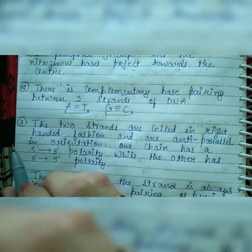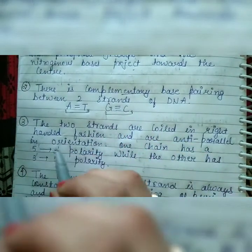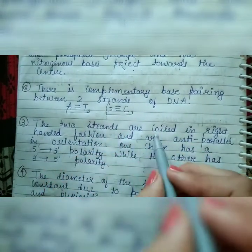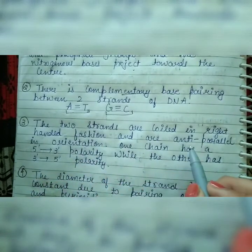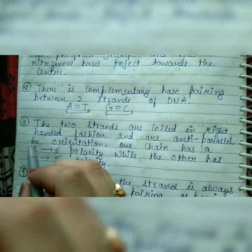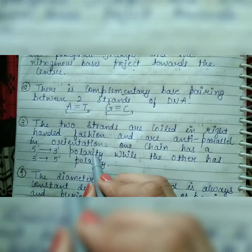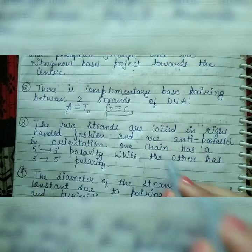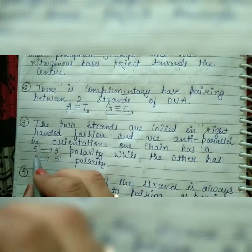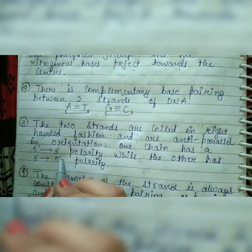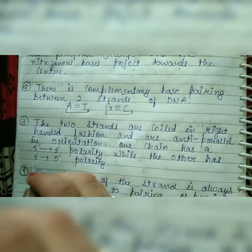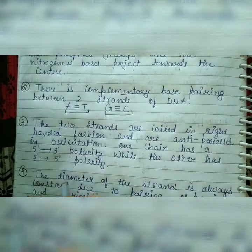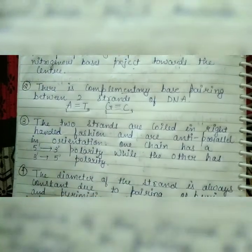The two strands are coiled in a right-handed fashion and are in anti-parallel orientation. One chain has 5' to 3' polarity while the other has 3' to 5' polarity.